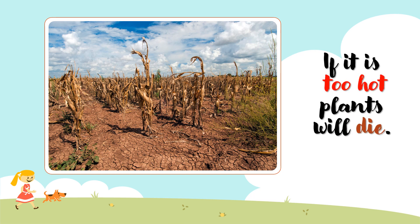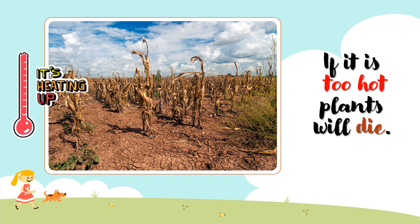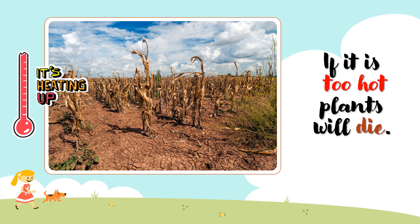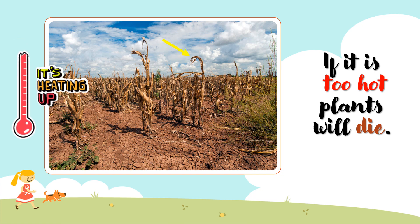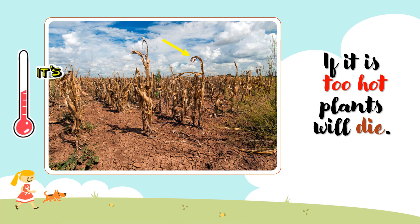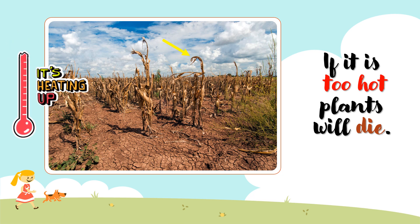If it's too hot, plants will die. If the weather is too hot, plants can lose a lot of water that they need to grow. This may also be manifested by a drooping leaf. If this condition is ignored, the plants will eventually dry up and die.